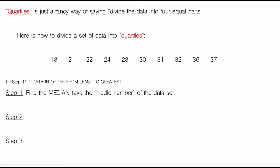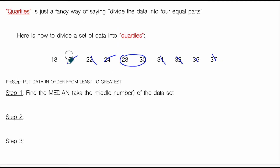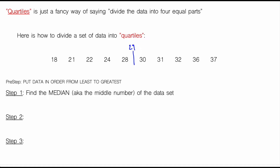In this data set, there are 10 numbers. To cut it in half, I go from the front and back toward the middle. In this case, the middle falls between 28 and 30. If you have two middle numbers, you add them up and divide by two — so the true middle of this data set is 29. Now we have a lower set of data and an upper set of data, all centered around our median.